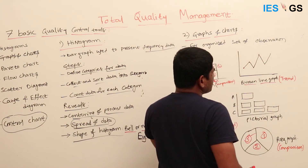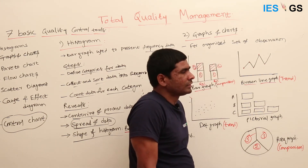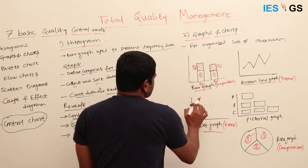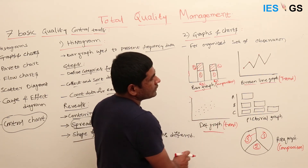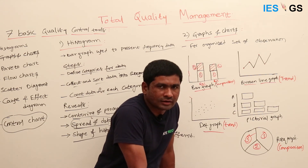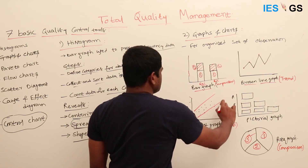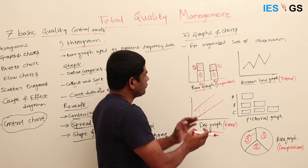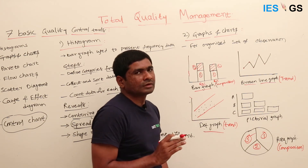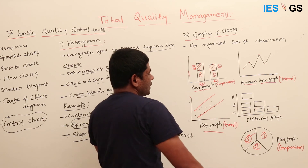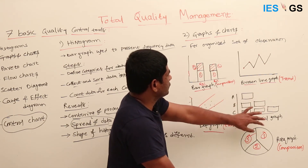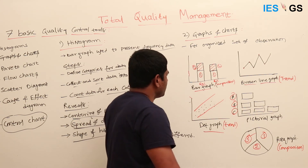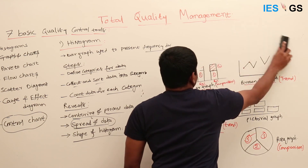We also have a broken line graph where you collect data points, plot them, and join them to get a trend line — showing how data is varying across different values. There is also a dot curve graph where you can see the concentration or intensity of the data. If the data is situated between two lines, it means most of the data is concentrated there and not going out — giving us useful information. We also have pictorial graphs to compare different components, such as component A, B, and C.